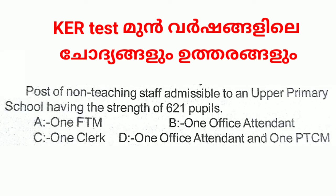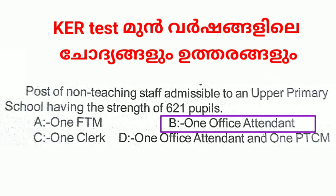Post of non-teaching staff admissible to an upper primary school having the strength of 22 pupils: A. One FTCM, B. One Office Attendant, C. One Clerk, D. One Office Attendant and one PTCM. Answer: B. One Office Attendant.